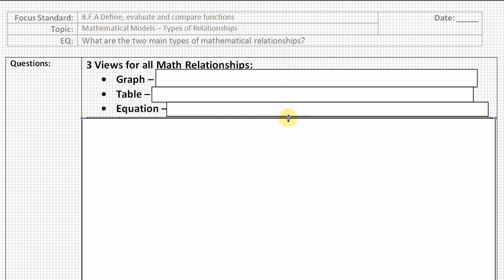So in our study of mathematics this year, we're going to be looking at all sorts of mathematical relationships between two different variables, and there are three different views when looking at mathematical relationships, and that is a graph, a table, or an equation, and each one of these views gives us a slightly different perspective and is useful for different reasons.